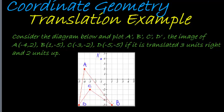For B, 1, 2, 3 units to the right and two units up. There we have B, that is B'.